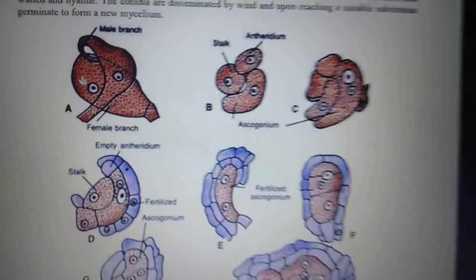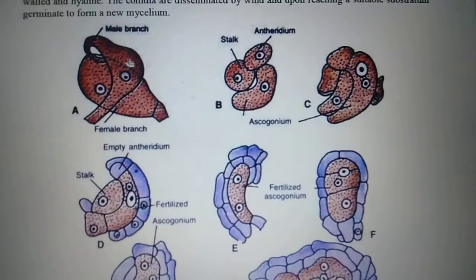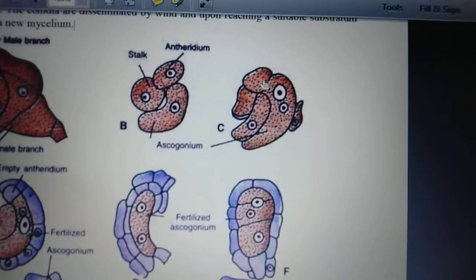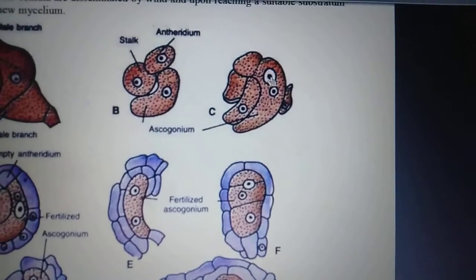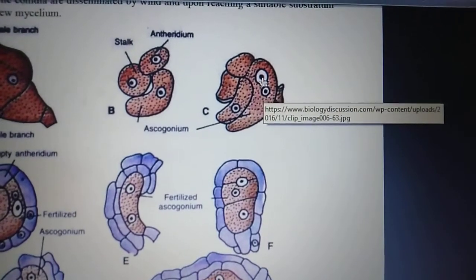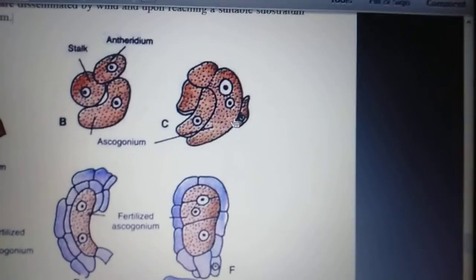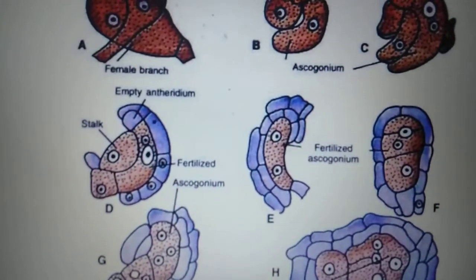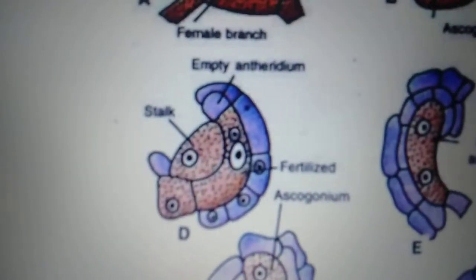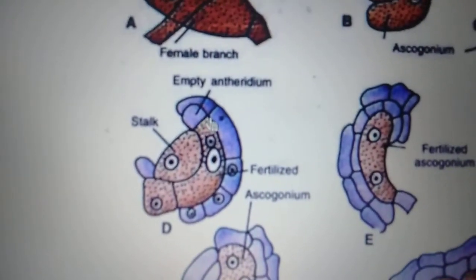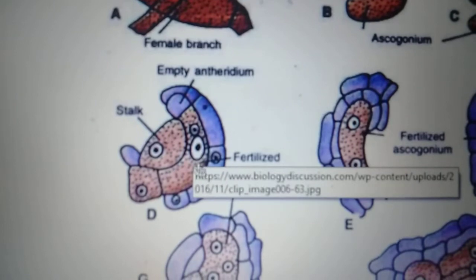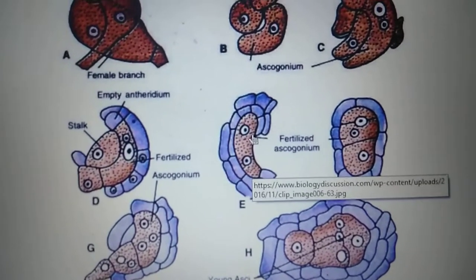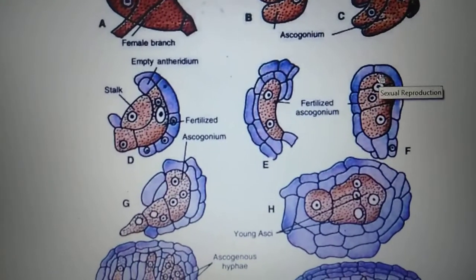You can see the ascogonium as the female branch and the anthridium as the male branch — this is unicellular. When they come close, the wall disintegrates and the anthridium nucleus enters the ascogonium, forming a binucleate form. Plasmogamy occurs but karyogamy does not occur at this stage. Then in the next step, karyogamy will take place. You can see the empty anthridium labeled here, and this is the fertilized ascogonium with young asci visible.